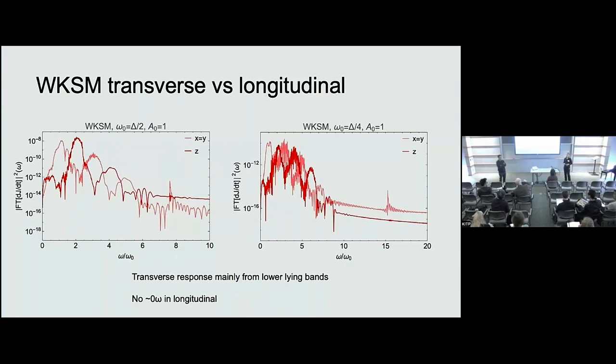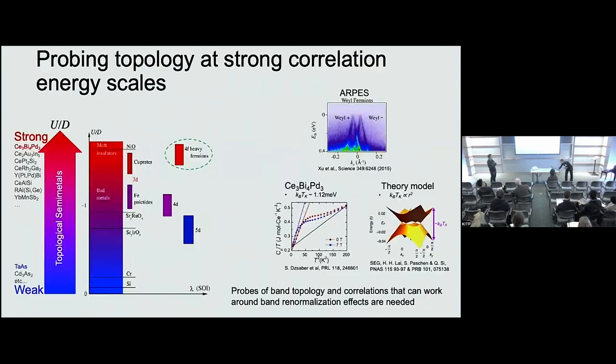And so and I guess maybe this is an old question. But does this give some signature and like the heat capacity? Are there other signatures that you have this Weyl node exactly pinned at the Fermi energy? Well, I mean, so the specific heat that I showed in the very beginning.